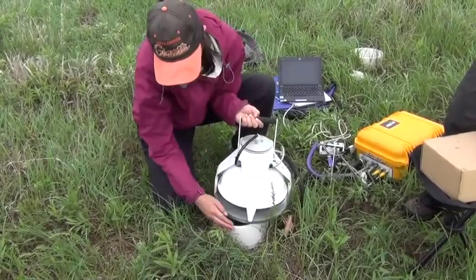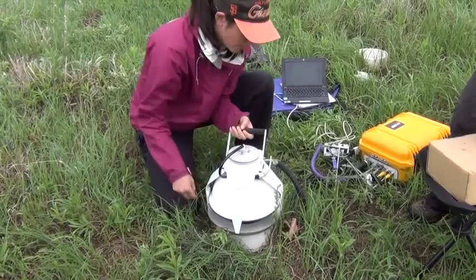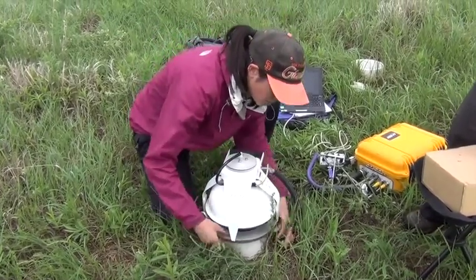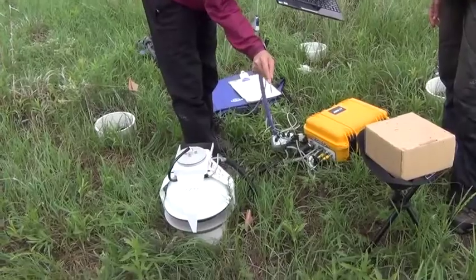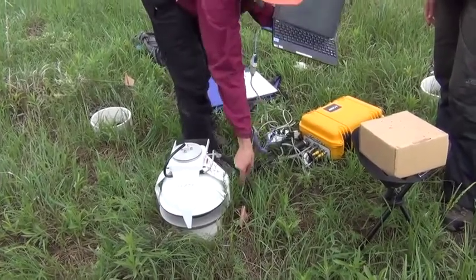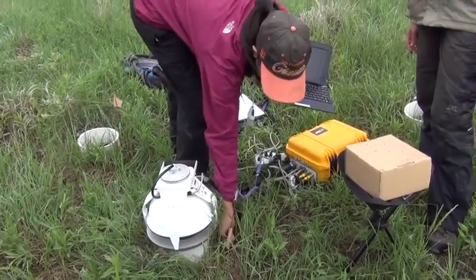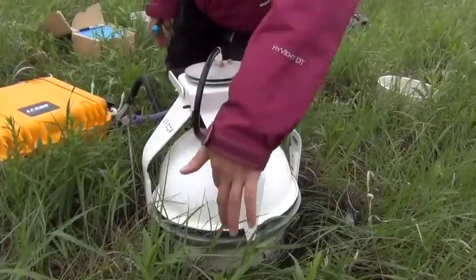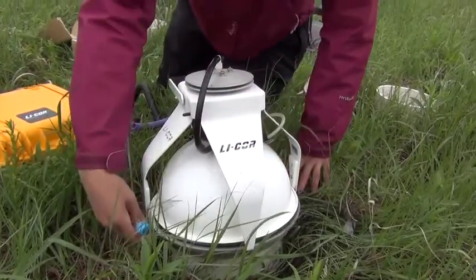Now let's see the instrument take a measurement. We start by placing the chamber onto the collar, being sure that we have a tight seal. Next, we insert our temperature probe. We want to measure temperature because it is a main control on soil respiration. Now the chamber closes automatically and the measurement begins.